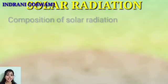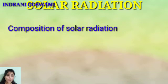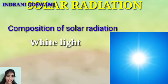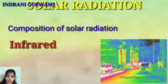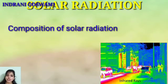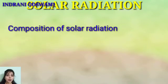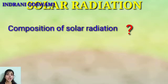Solar radiation is composed of three different parts. Number one is white light, or visible light, that we can see. Number two is infrared. Number three is ultraviolet. This is an important question: what is the composition of solar radiation?